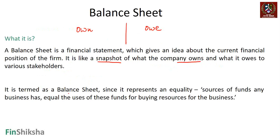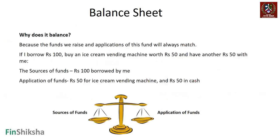It is termed a balance sheet because it represents an equality. Sources of funds for a business equal the uses of those funds for buying resources. We'll use terms like sources of funds, what we owe, and liabilities interchangeably as we go along. Any business has to raise money, and it's called a balance sheet because it balances - it's an equality.